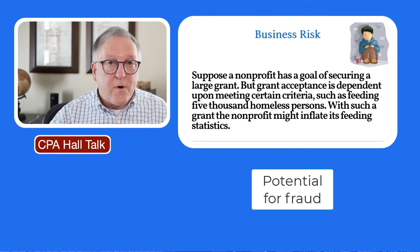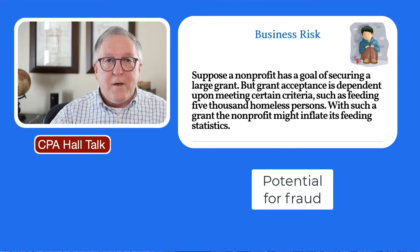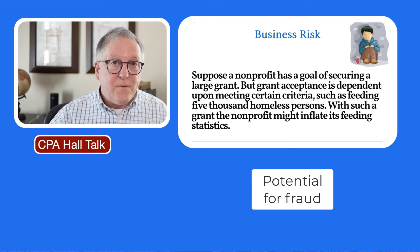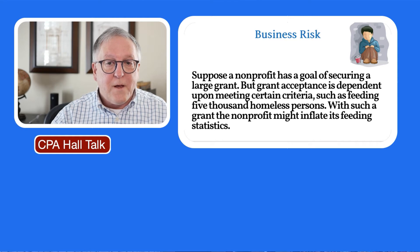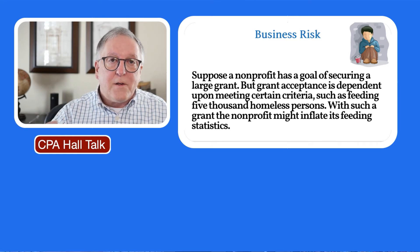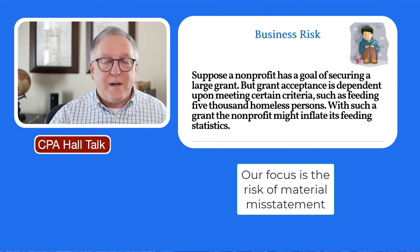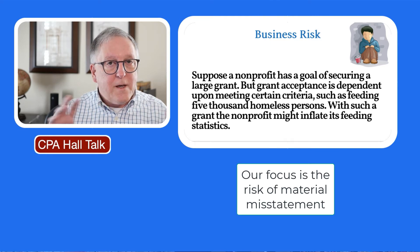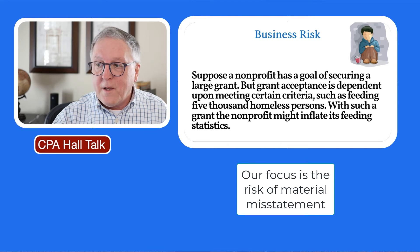You could have the potential for fraud in the grant area for this not-for-profit. Even nonprofits, which are generally good in nature, can have fraud based on their objectives. They may rationalize and say they need the grant in order to feed other homeless people — but you need to understand what the objectives are of the entity. Gaining an understanding of the entity is not just a disconnected exercise; we need to know the context, chemistry, and mission of the organization so that we know where the risk of material misstatement is highest.